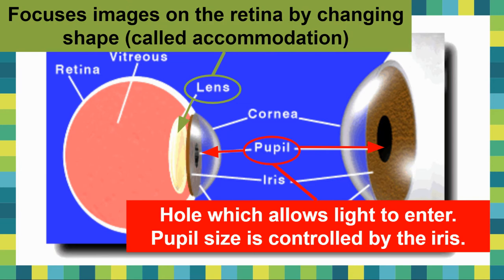Your lens, located just behind the pupil, focuses the image on the retina. We call this changing shape of the lens accommodation. When light enters through your cornea, goes through your pupil, and hits your lens, the lens has to send it all the way back to the retina. When you're trying to see things far away or up close, your lens changes its shape accordingly — that's called accommodation.